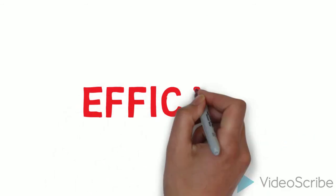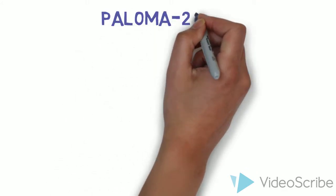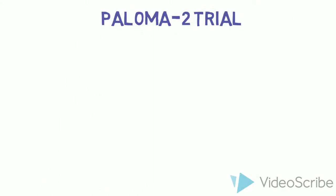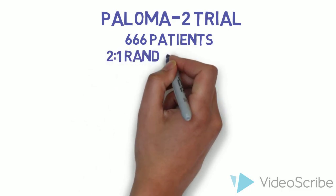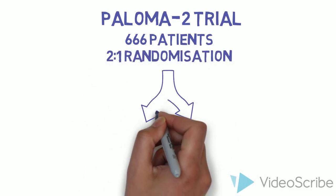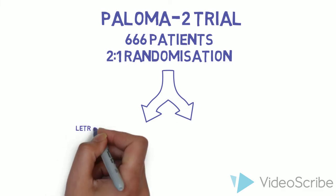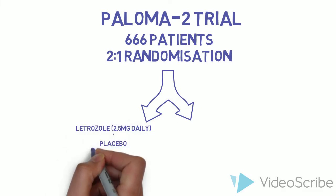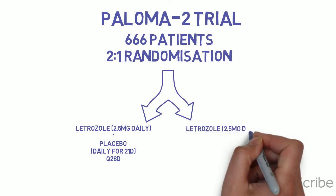So how effective are they? The PALOMA-2 trial randomized 666 patients with newly diagnosed oestrogen receptor positive metastatic breast cancer in a 2 to 1 ratio to palbocyclib or placebo. Taken for 21 days on a 28-day cycle, both arms received continuous letrozole at the normal dose.